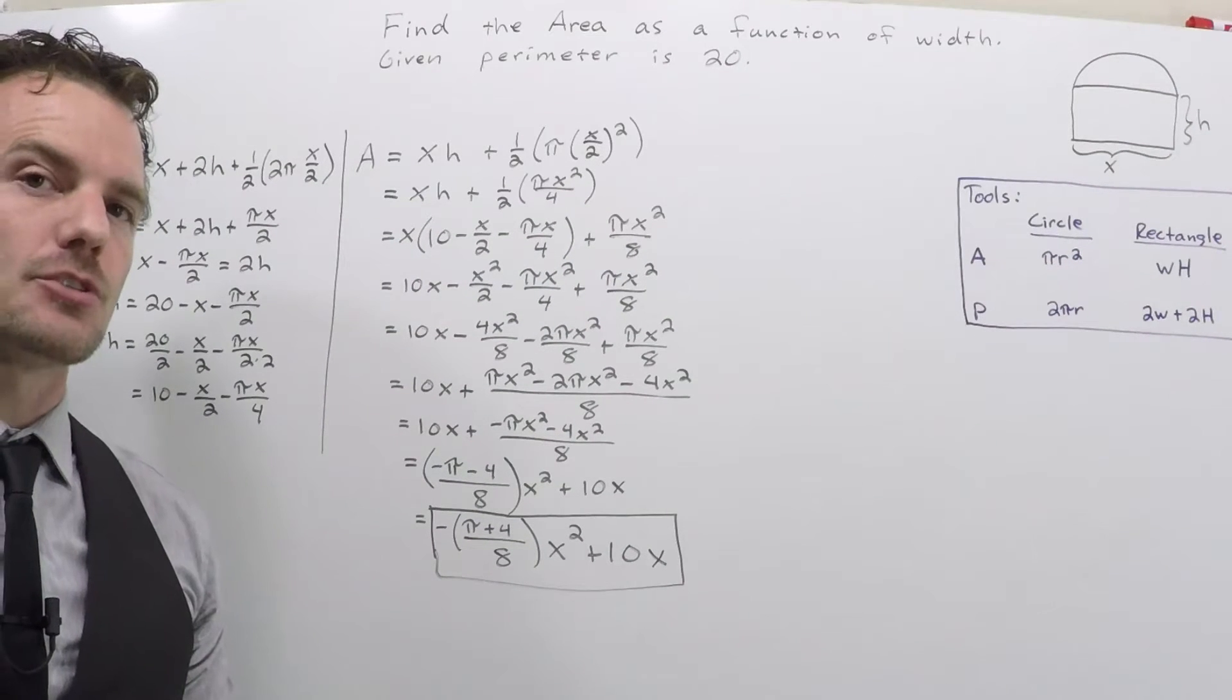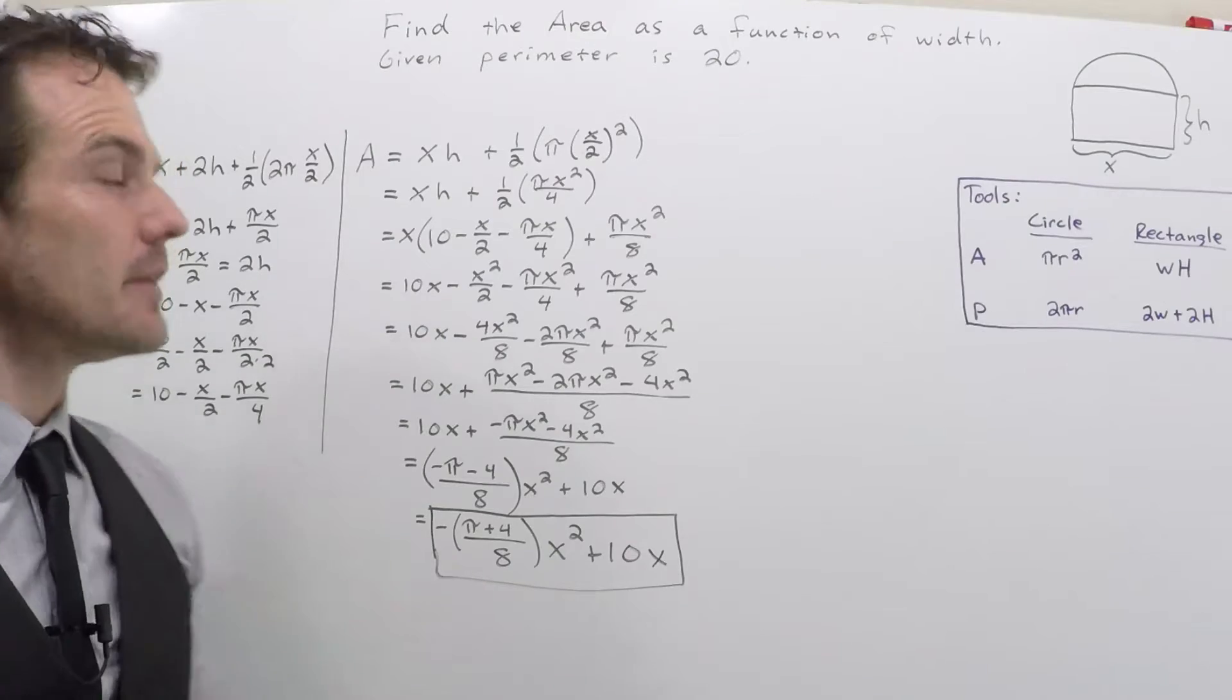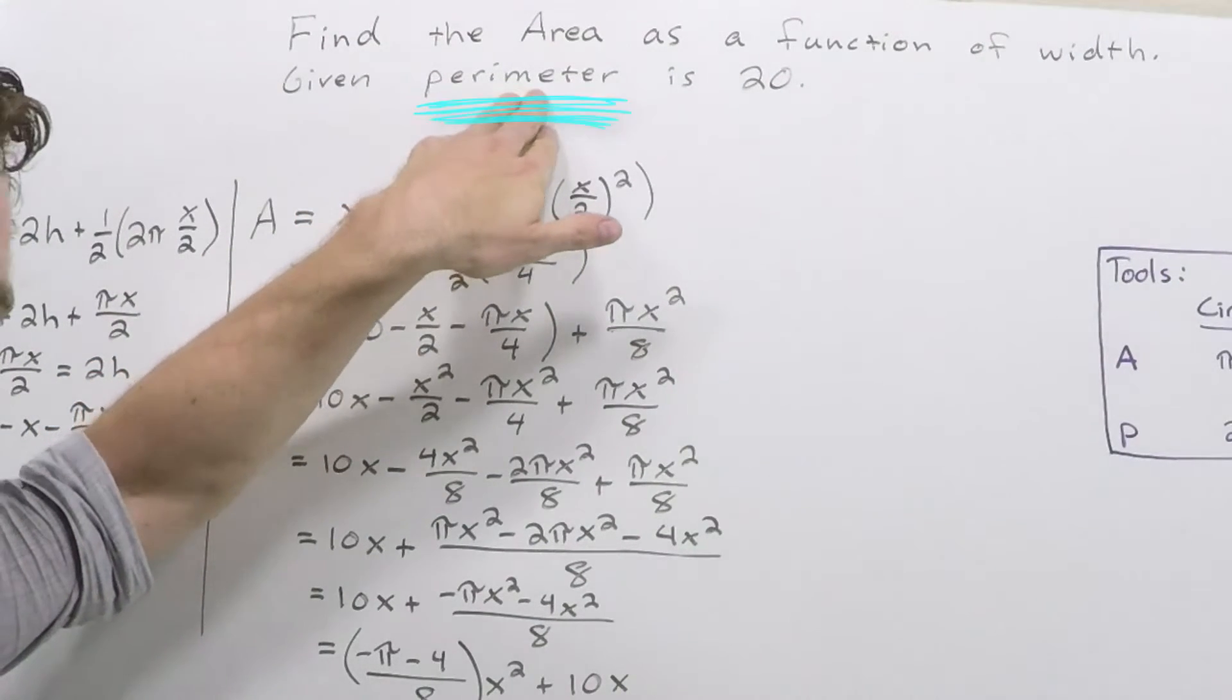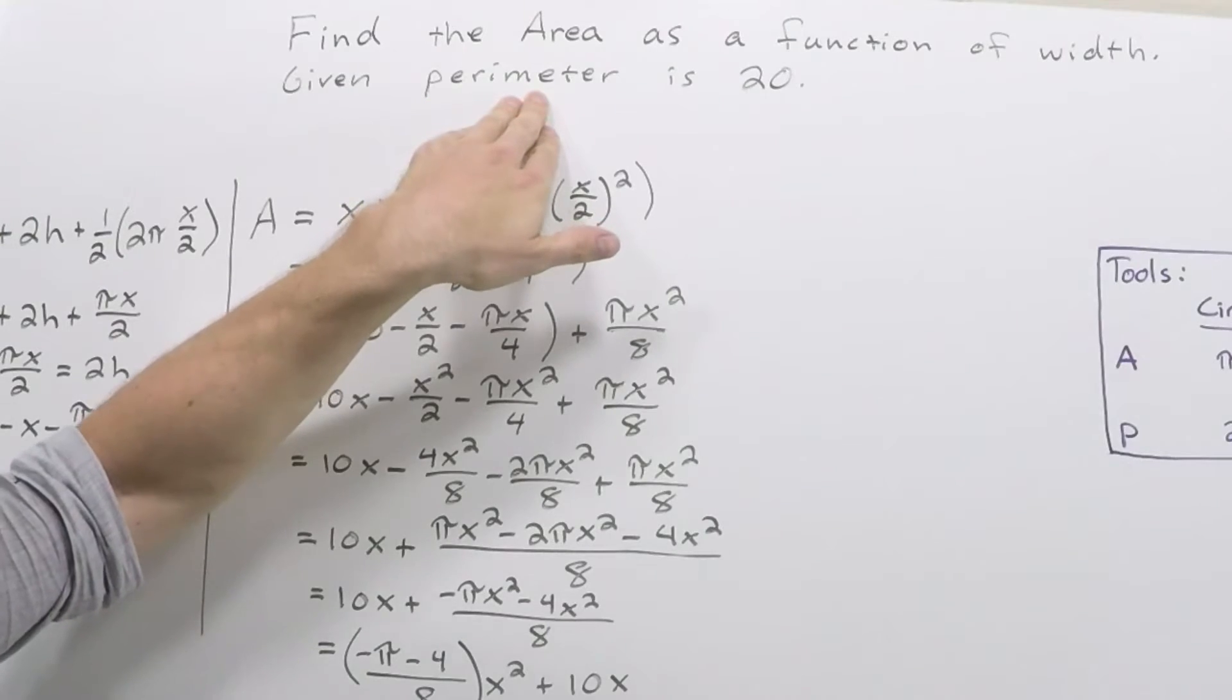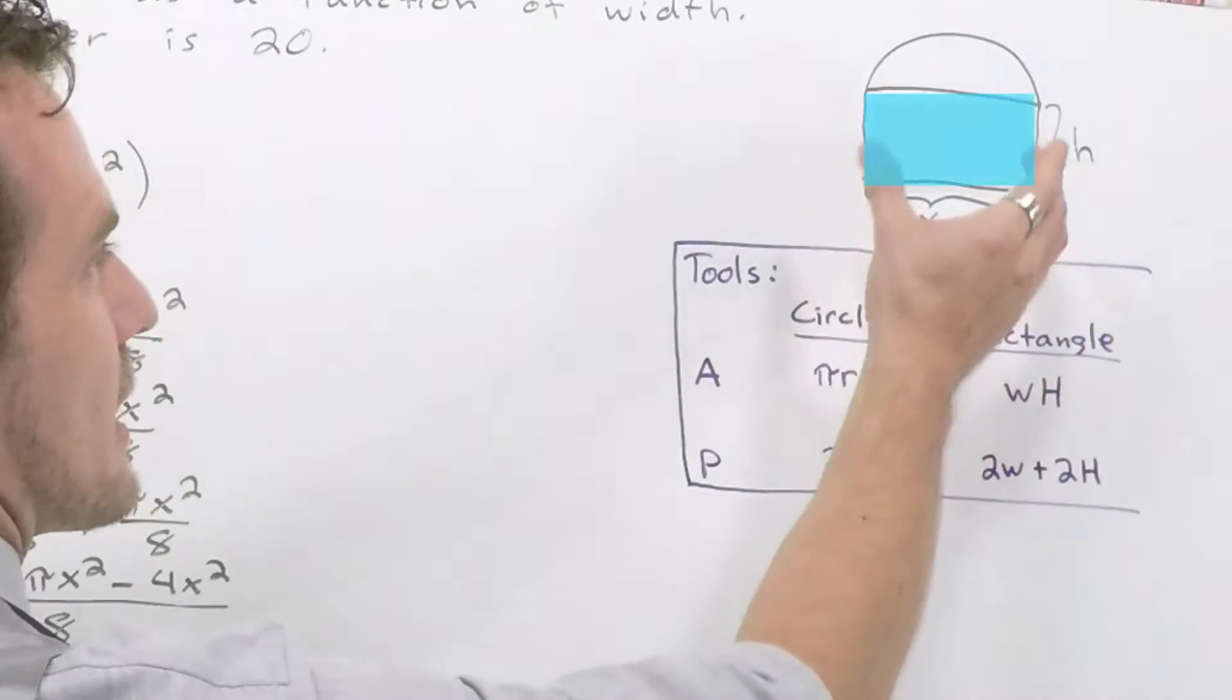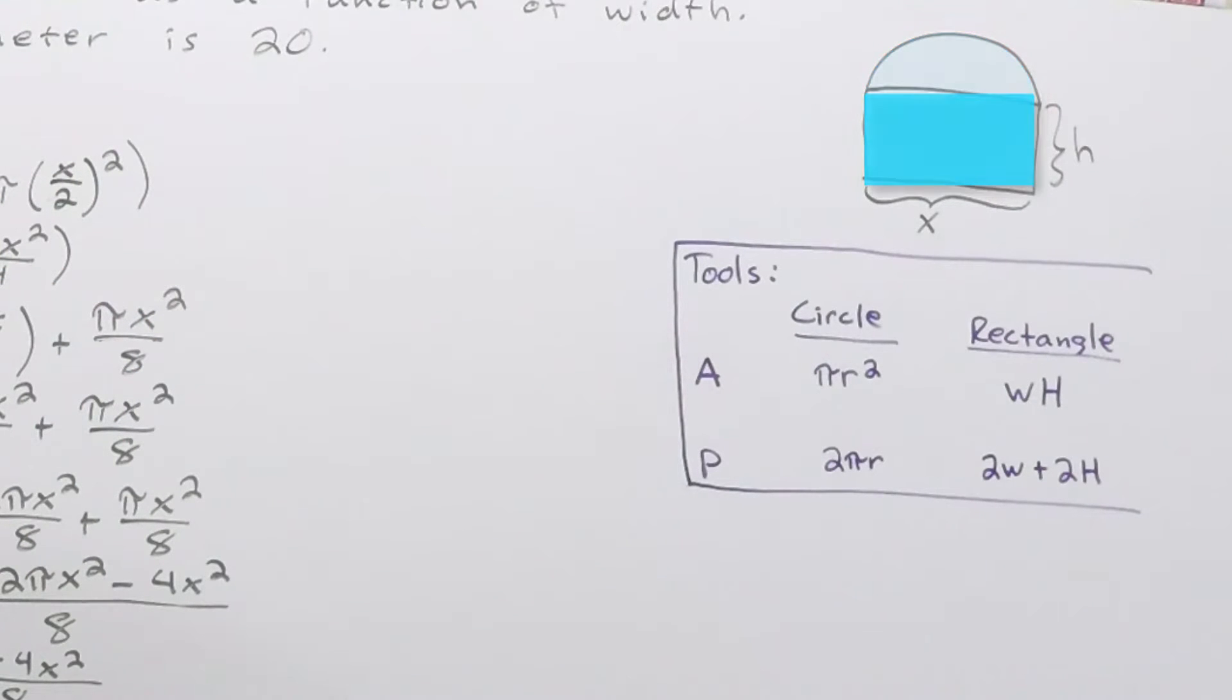The tools that we'll need in order to do this are two-fold. They gave us information about the perimeter, so we're going to need something to work with perimeter, and we also need a tool for the area. Looking at a Norman window, you've got a rectangle and you've got a semi-circle or half-circle.